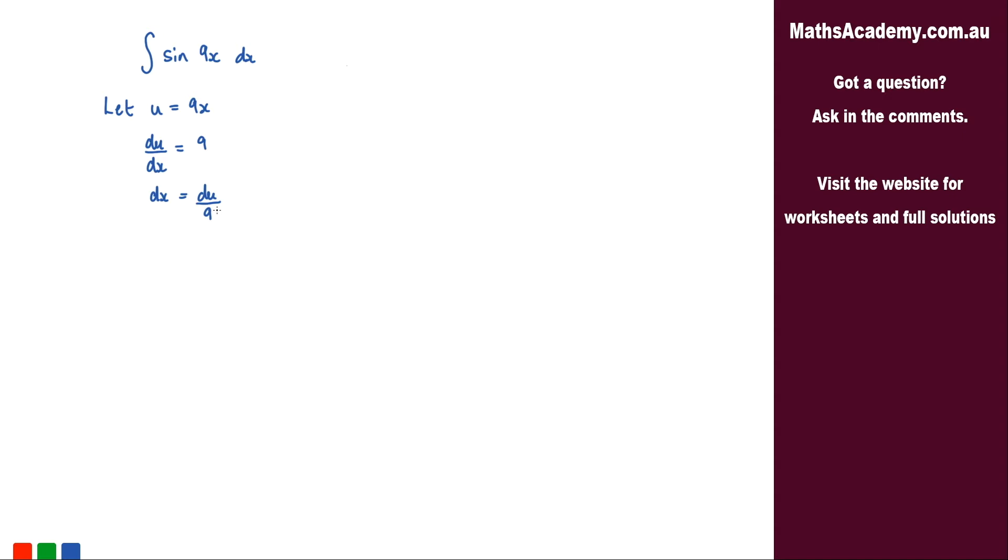Now that I've got those, I can substitute those back into the original integral. So what I'll have is the integral of sine. Now instead of the 9x, we know that 9x is now u, so I can substitute that in. So sine u.